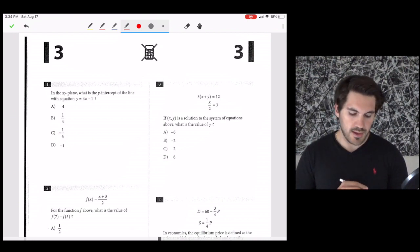Number one, in the xy-plane, what is the y-intercept of the line with the equation y equals 4x minus 1? Well, the y-intercept is simply the number that's by itself. It's not next to the variable. It's where x equals 0. In this scenario, it would just be negative 1, d.